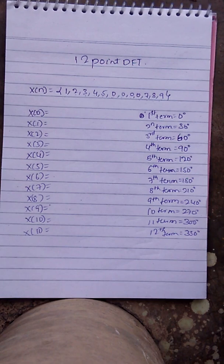Here, I am going to take the example of x(n) equal to 1, 2, 3, 4, 5, 0, 0, 0, 0, 7, 8, 9, which is a 12-point DFT.